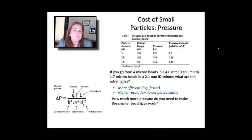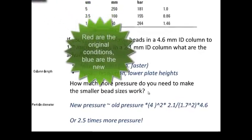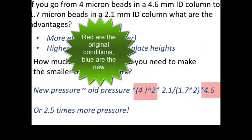Now, a little bit of quantitative work. How much more pressure do you need to make the smaller bead sizes work? Well, you might think you need all of these different parameters in the equation to go calculate the pressure in some units. But we're not going to do that. What I want to do is just briefly show you, if you want to go from one column conditions to another column conditions, how can you calculate the relative change in pressure?